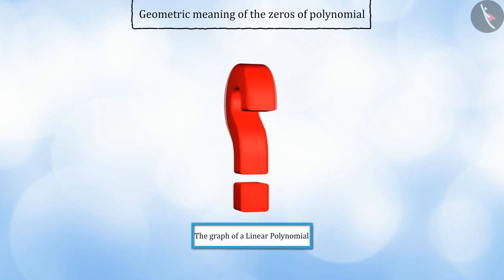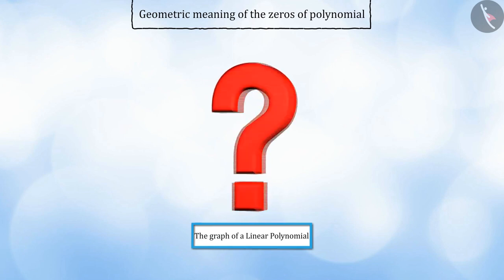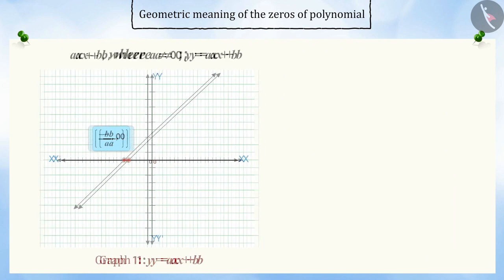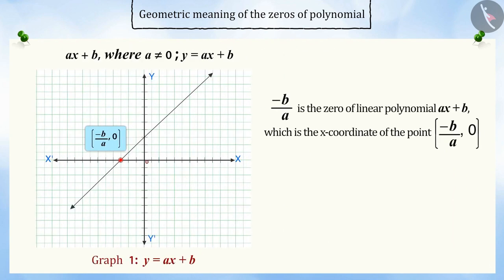Can you tell how the graph of a linear polynomial will look? For a linear polynomial ax + b, in the graph, y = ax + b is represented by a straight line which intersects the x-axis at the point (−b/a, 0). This gives us the conclusion that the linear polynomial ax + b has one zero, −b/a, which is the x-coordinate of the point (−b/a, 0).